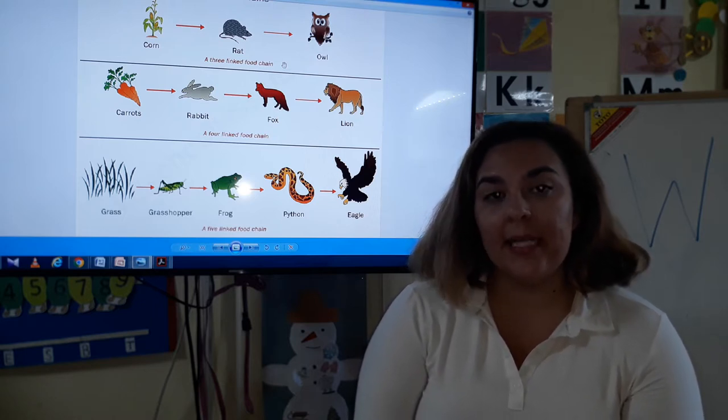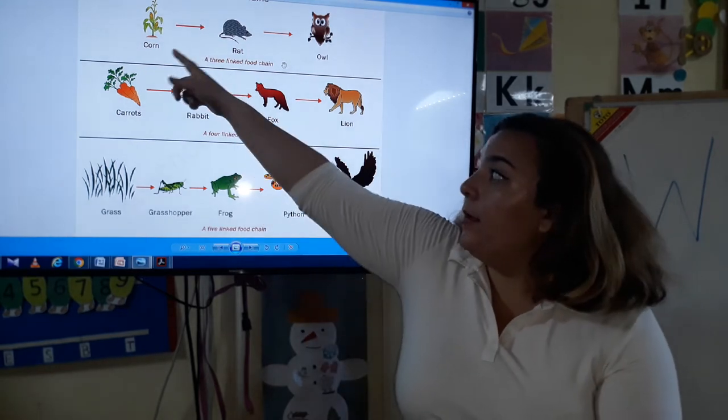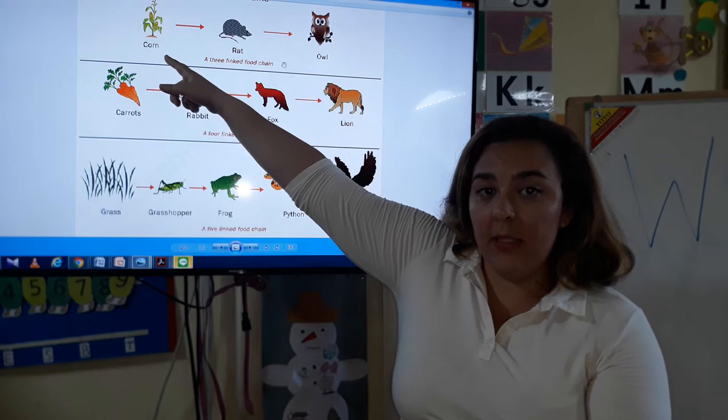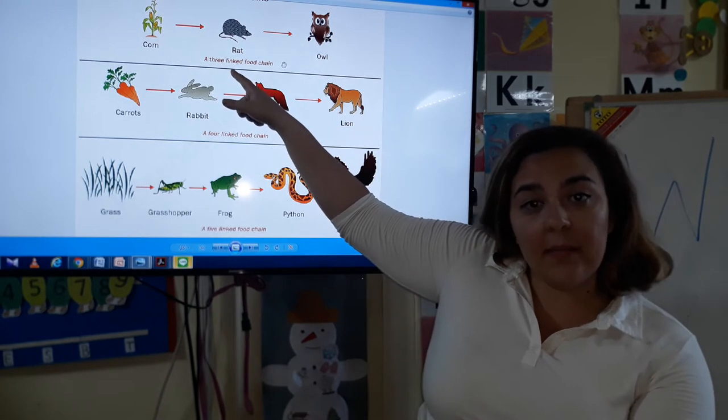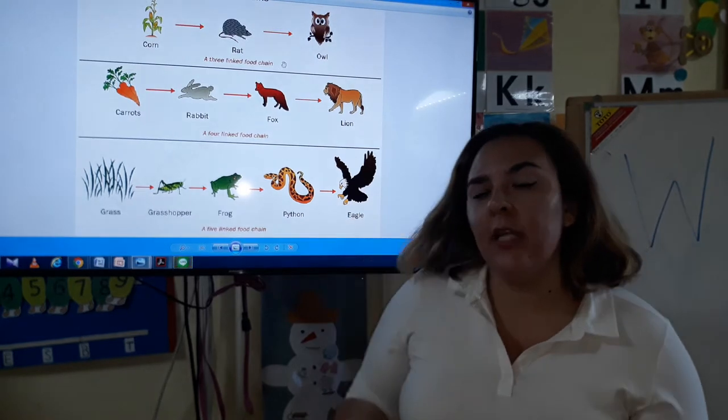What it means essentially is that there are plants at the bottom, a herbivore in the middle, and a carnivore at the top.